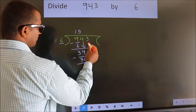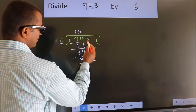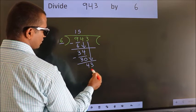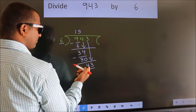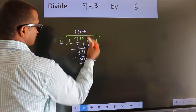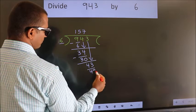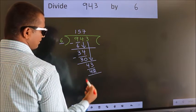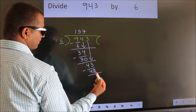After this, bring down the beside number. So 3 down, 43. A number close to 43 in the 6 table is 6 times 7 is 42. Now we subtract. We get 1.